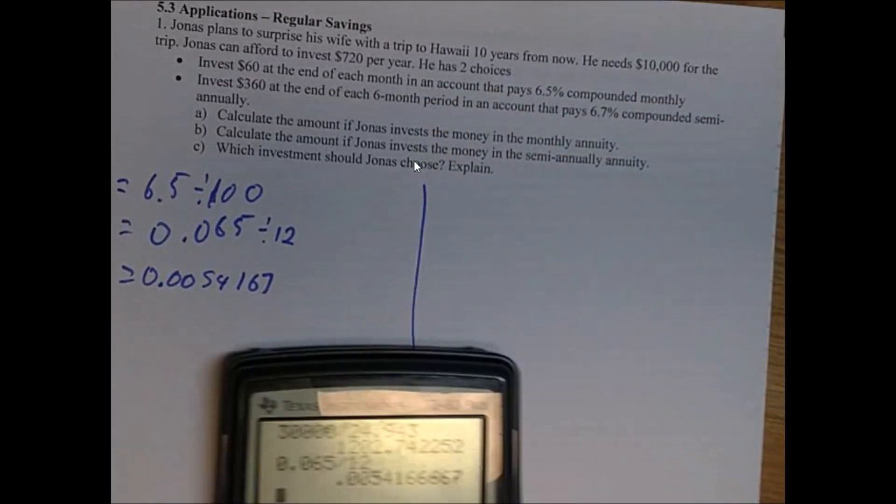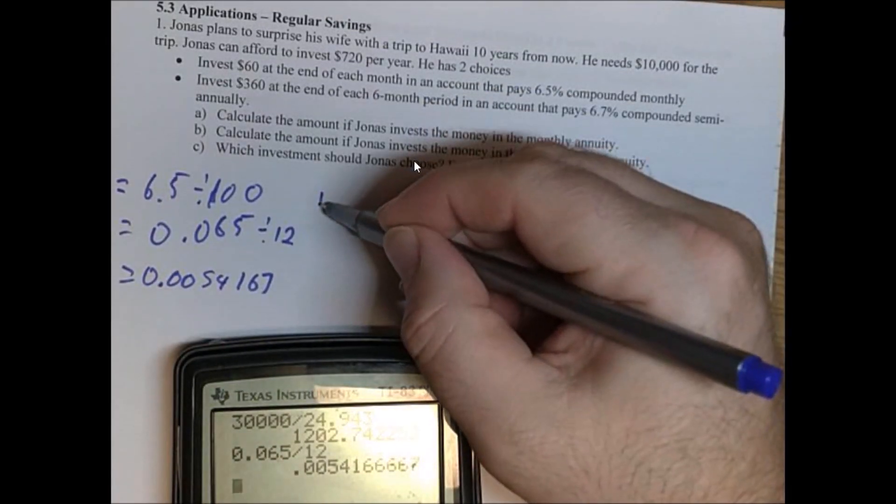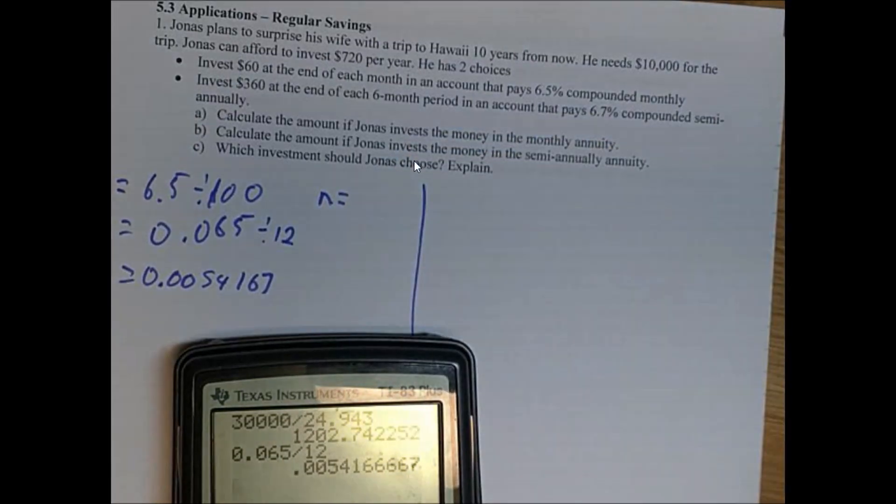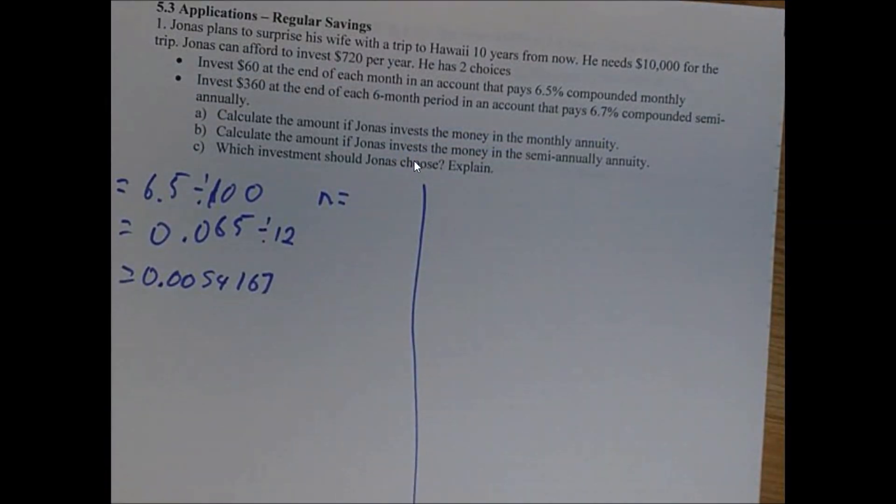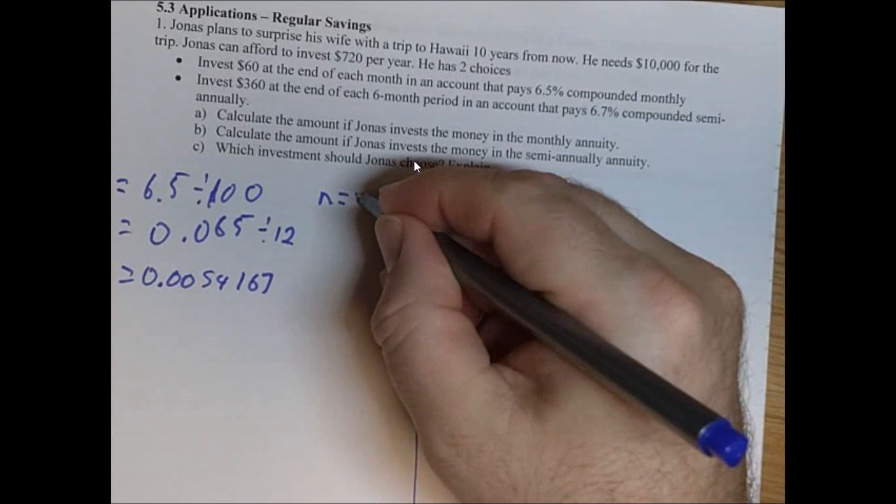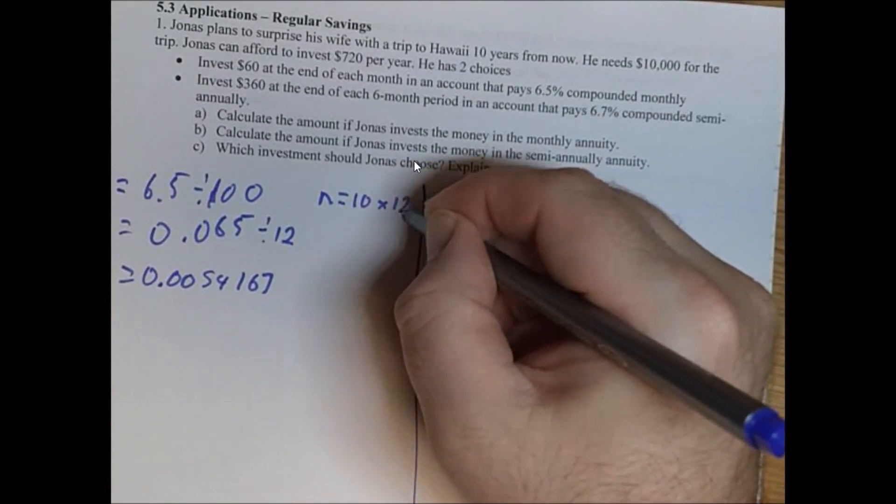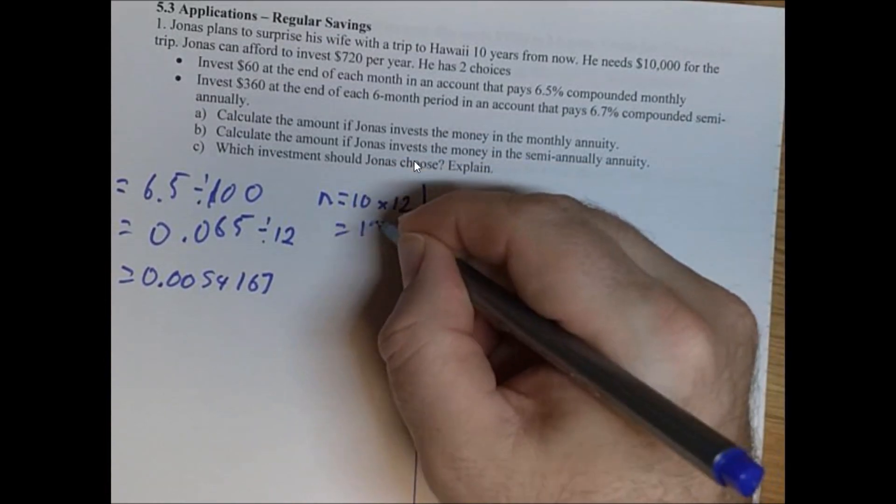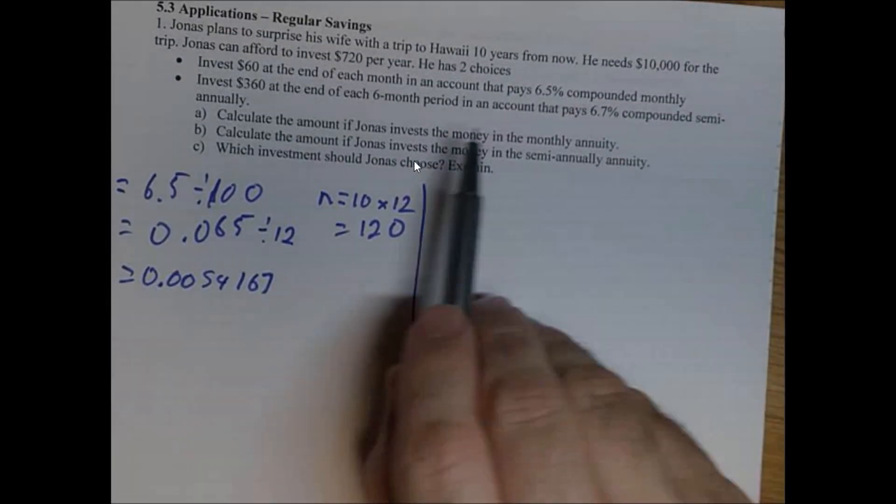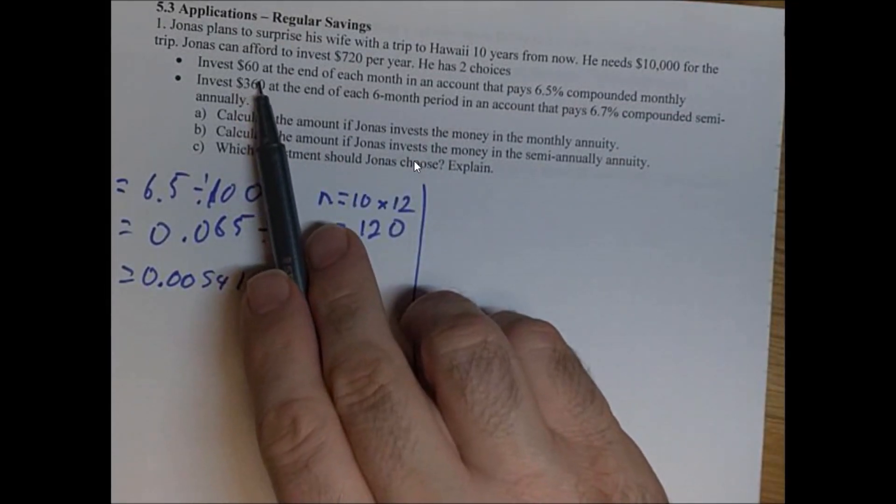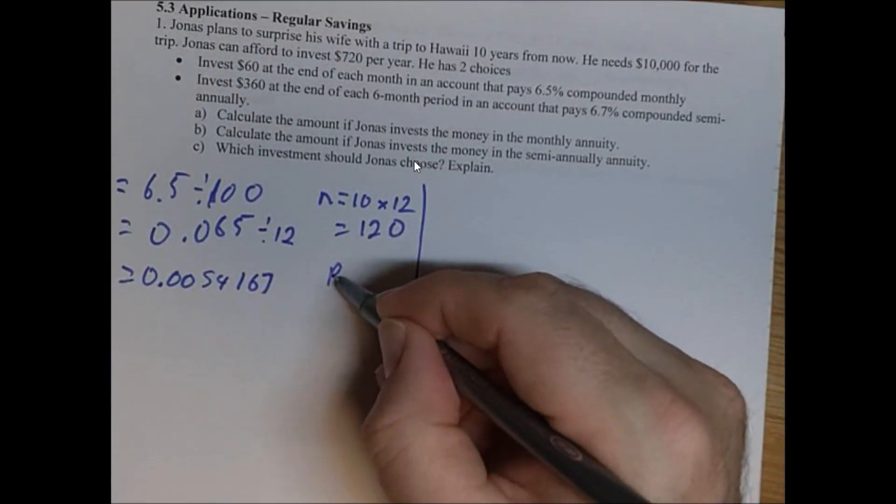Now N. I know it's for 10 years. But let's see N. So how many times is he going to be placing it? So he's got 10 years and it's monthly times 12. So it's 10 times 12. He's going to have 120 of these payments. So monthly. And he's going to pay 60 bucks. So R is 60.